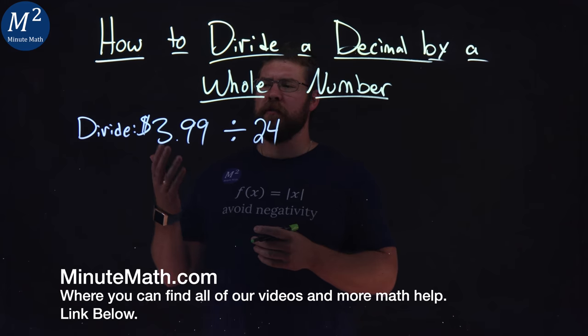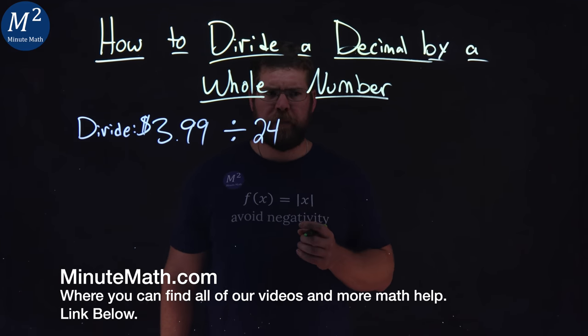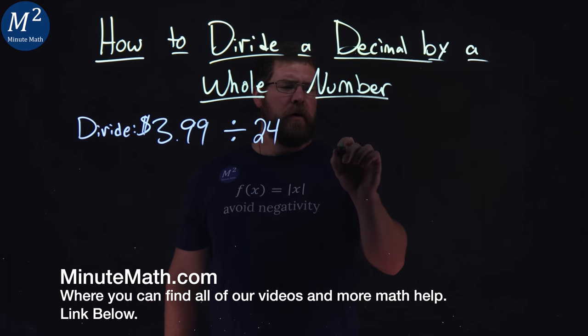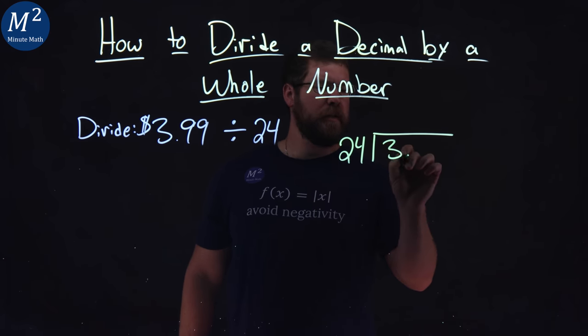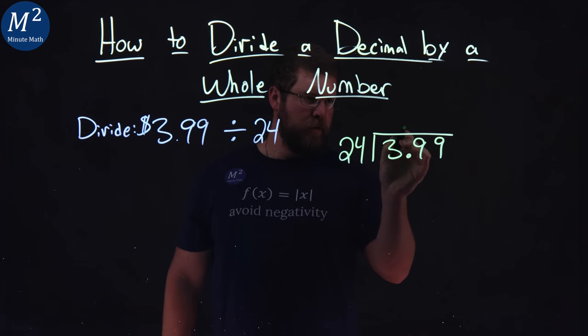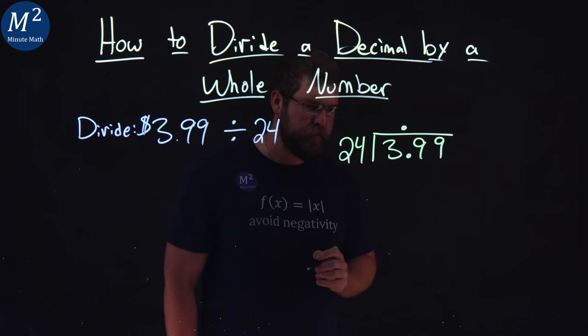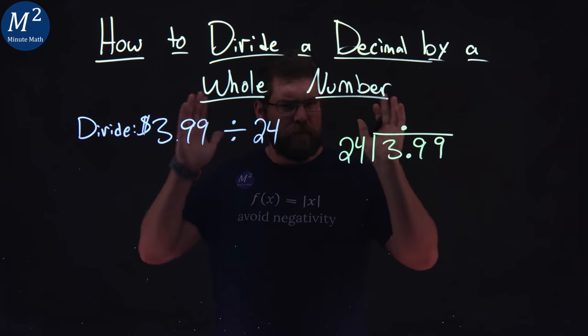We're given this problem here: divide $3.99 by 24. We have to deal with some long division here. 24 goes into $3.99. We're going to make sure our decimal place lines up here. Now, we don't write the dollar sign right now, but we'll keep that in mind.